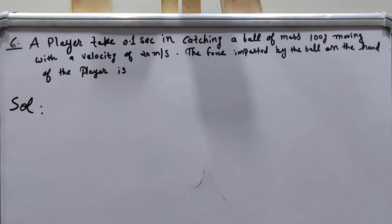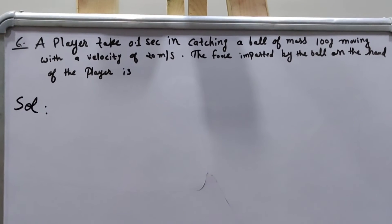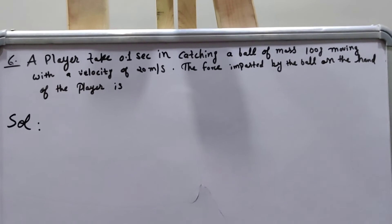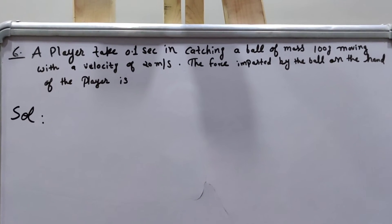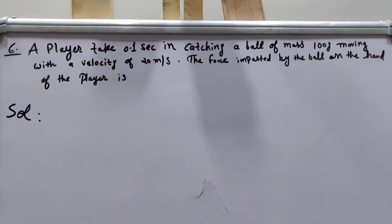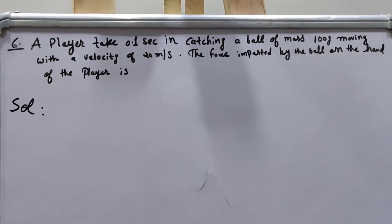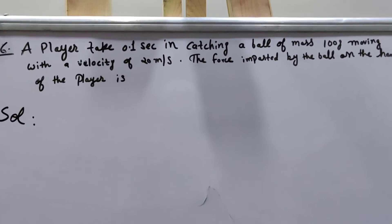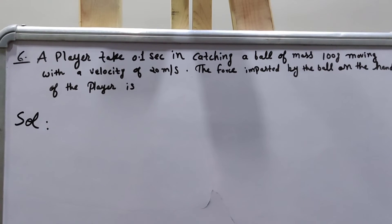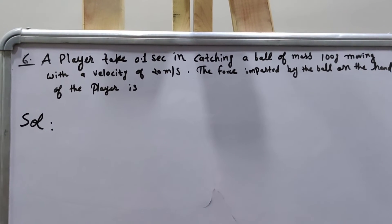As you can see, a player takes 0.1 seconds in catching a ball of mass 100 grams moving with a velocity of 20 meters per second. The force imparted by the ball on the hand of the player is what we have to find.